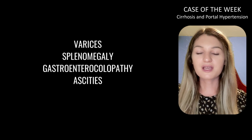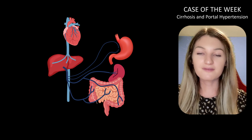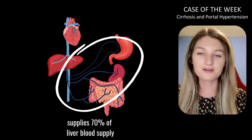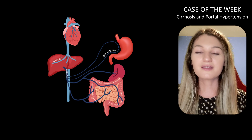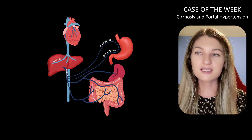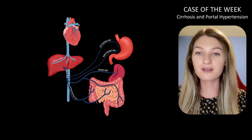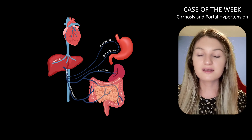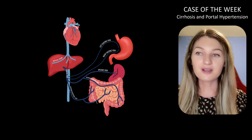Here we have a checklist of things commonly seen in cirrhosis with portal hypertension and a simplified diagram of the portal venous system, from which the liver gets 70% of its blood supply, with the other 30% from the hepatic arteries. The right and left gastric veins drain the stomach and lower esophagus; the splenic vein drains the spleen and some of the pancreas; the SMV drains the cecum, ascending colon, majority of the transverse colon, small intestine, part of the stomach, greater omentum, and part of the pancreas; and the IMV drains the upper rectum, sigmoid colon, descending colon, and splenic flexure.